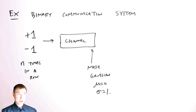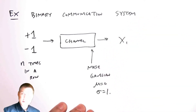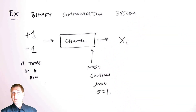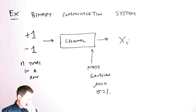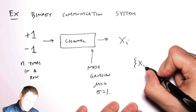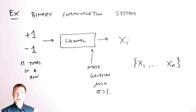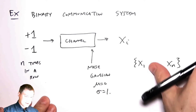So a transmitted plus one could turn into 1.25 or even 7.89 with very low probability. What comes out is a real number, not just a discrete one or zero value. The setup is: I transmit the same bit n times, I observe these n values, and now I want a decision rule that says, am I in the plus one case or am I in the minus one case?